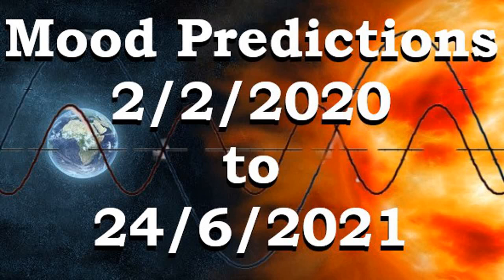Hello and welcome to this video — mood predictions from 2nd of February 2020 to 24th of June 2021. Today is the 2nd of February 2020, which is like two-two-two-two if you take away the zeros. An awesome day — a great day to start doing a mood wave prediction.